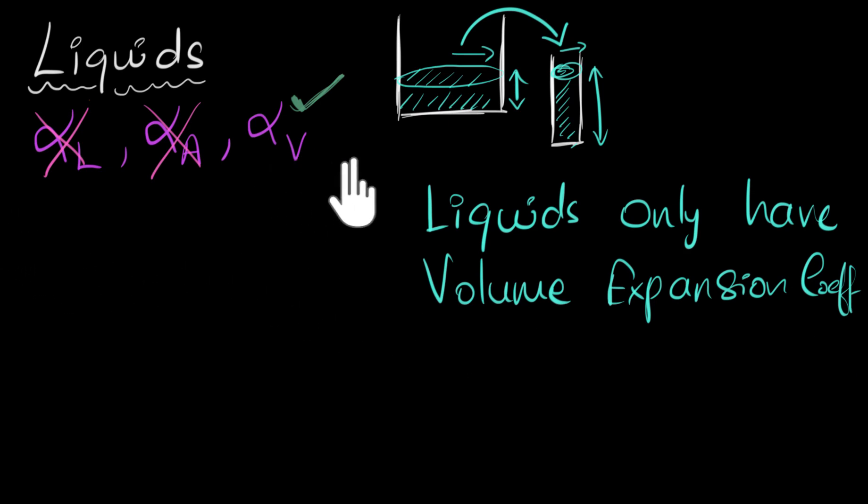And the way we define this number is identical to how we do it for solids. We define alpha V as change in volume per unit volume per unit temperature change. Again, if you require more clarity on this, if this seems a little bit confusing to you, go back and watch videos on volume expansions in solids, and then you can come back over here.